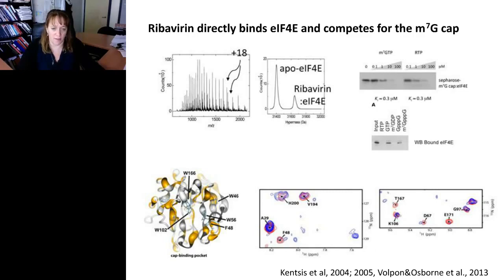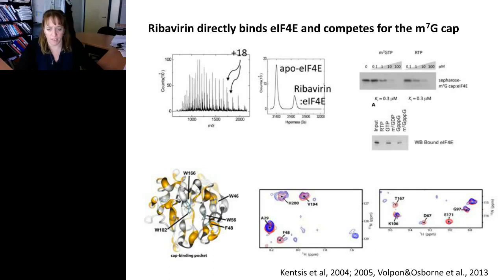We've also done NMR experiments, done by Mike Osborne and Laurent Volpon here at the University of Montreal. We can see that ribavirin binding causes chemical shift perturbations, indicating that it's binding to EIF4E. These changes are mapped on the 4E NMR structure. In red is APO 4E and in blue is RTP-bound 4E — we can see dramatic changes; for instance, F48 is deep within the 4E pocket, consistent with ribavirin binding directly into the cap-binding pocket, either overlapping or in a similar position to the cap itself.